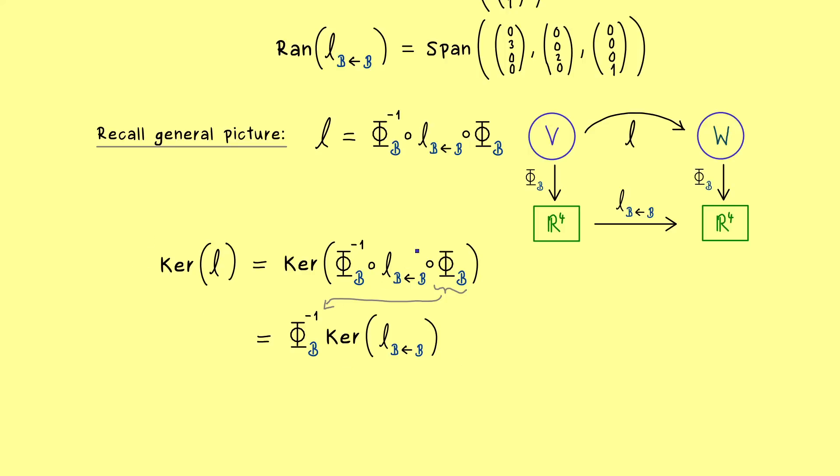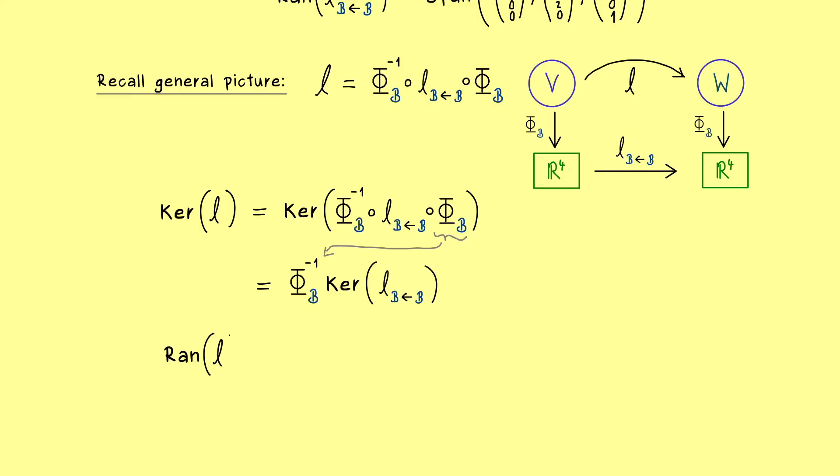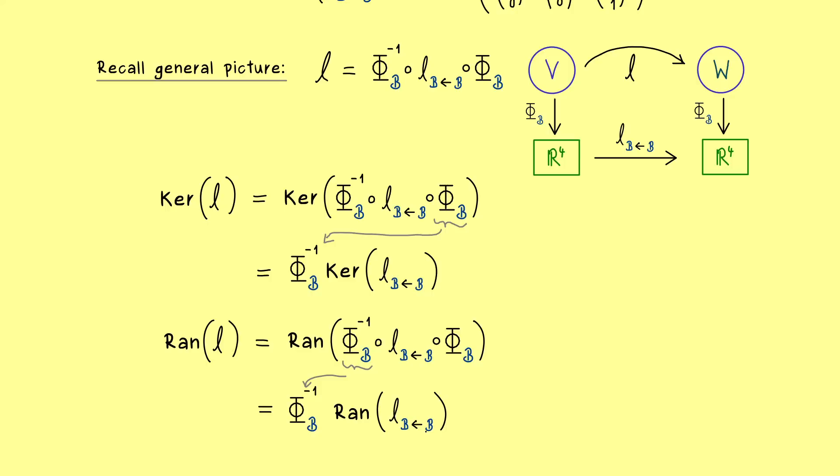And moreover a similar thing we also have for the range. In fact also this formula for the range we have already discussed in former videos. So what we have here with the combination of the three linear maps where the left hand side and the right hand side are invertible is simply that the first part here comes to the front. However there we don't put an inverse to it, it remains like it is. Also this nice formula you can easily check by using the definition of the range. Okay so now both formulas tell us in order to get our abstract subspaces we just have to transform the two spans from before.